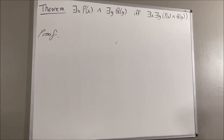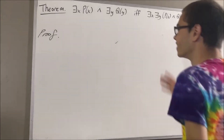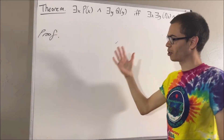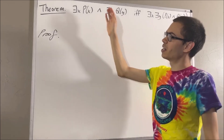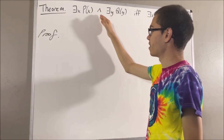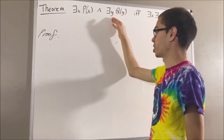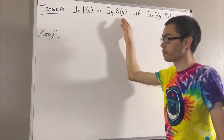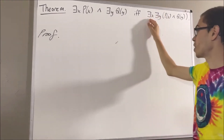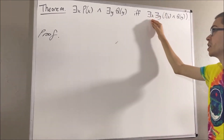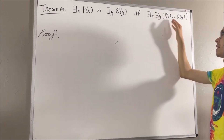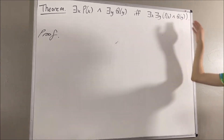Hello! In this video, we are going to prove the following theorem: there exists an x such that p of x, and there exists a y such that q of y, if and only if there exists an x such that there exists a y such that p of x and q of y.